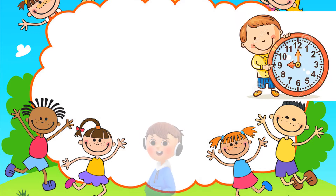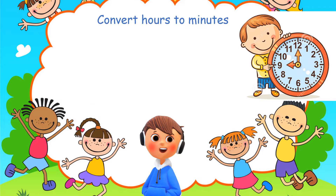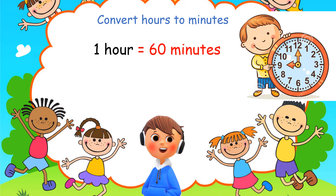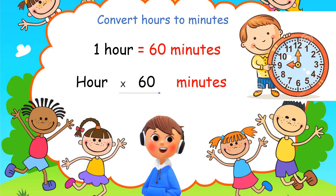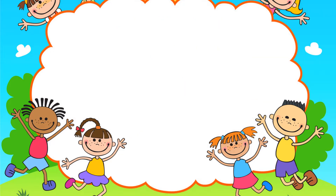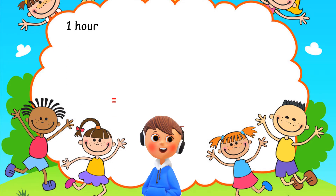Now let's look at converting hours to minutes. We know that one hour makes 60 minutes — there are 60 minutes in one hour. So to convert from hours to minutes, we multiply by 60. One hour equals 60 minutes, so two hours would be equal to 60 plus 60.